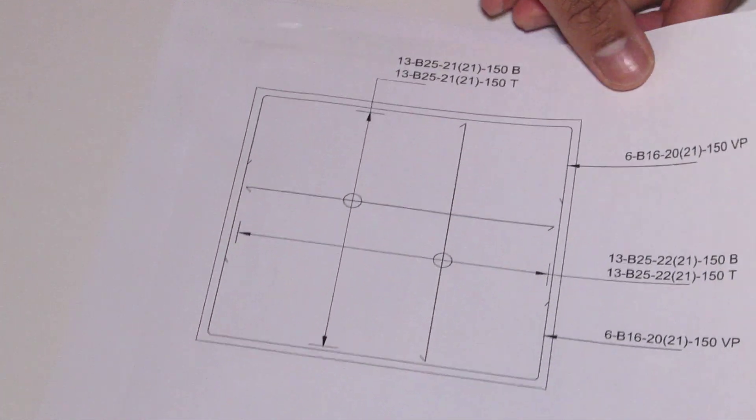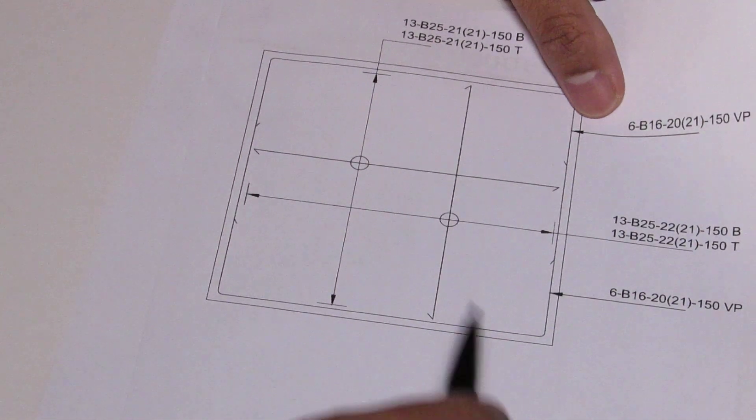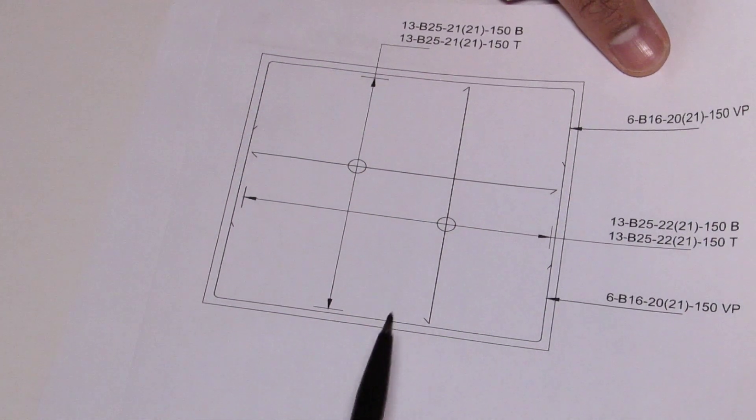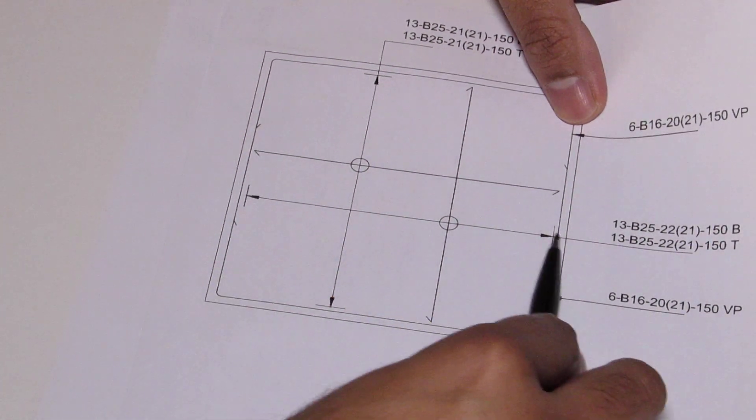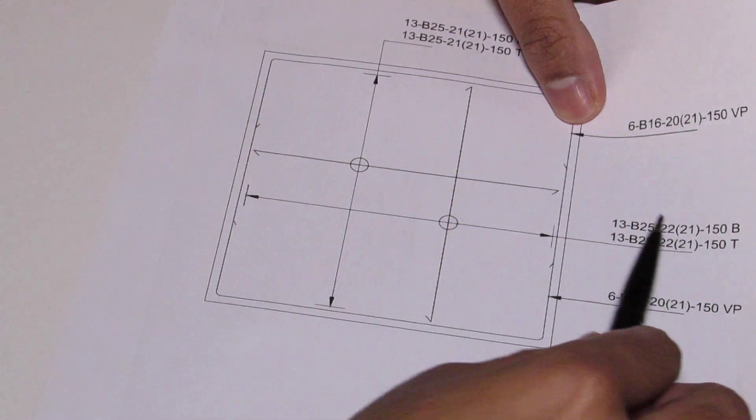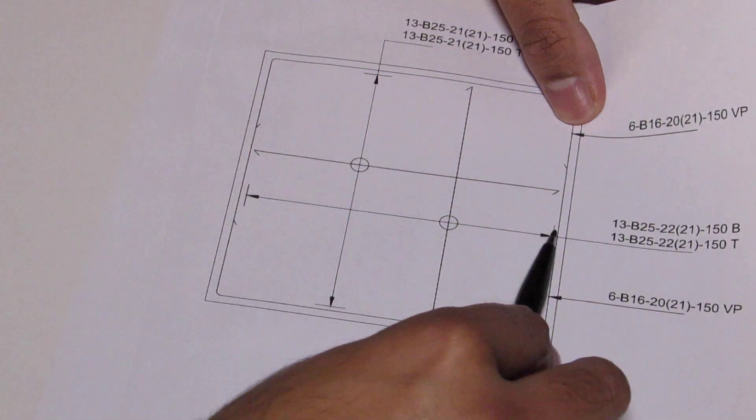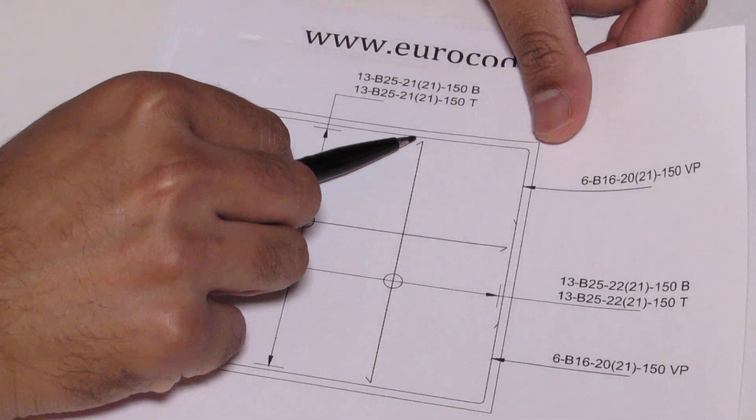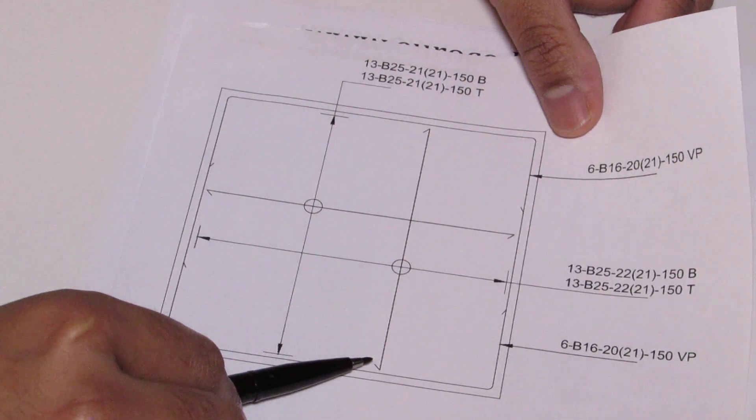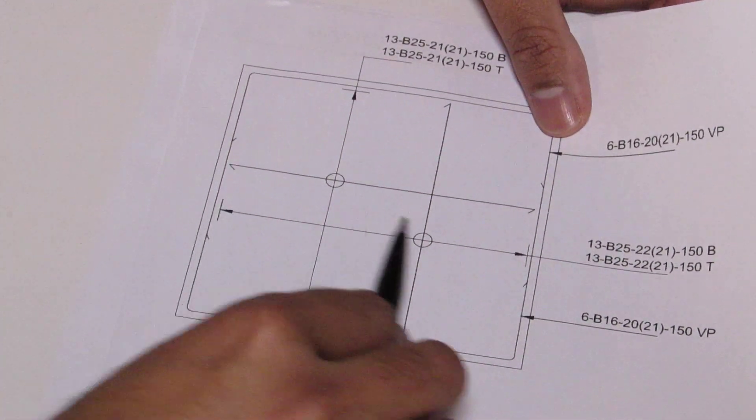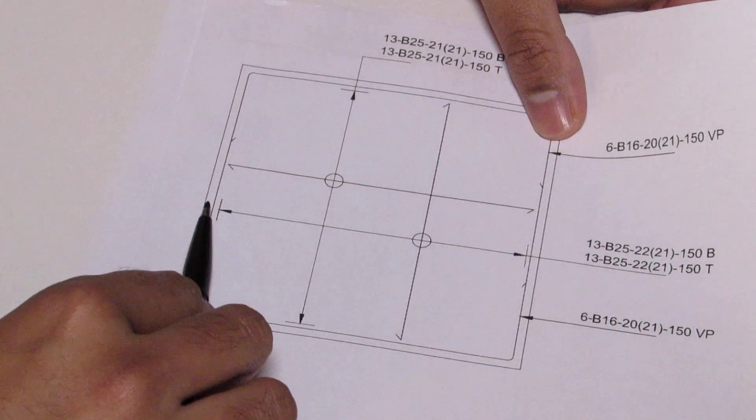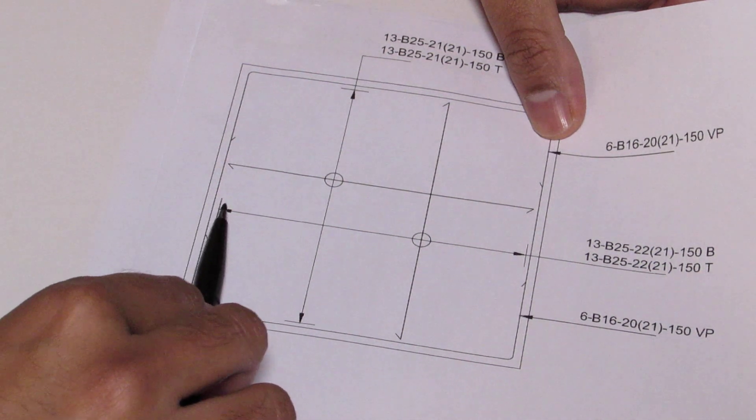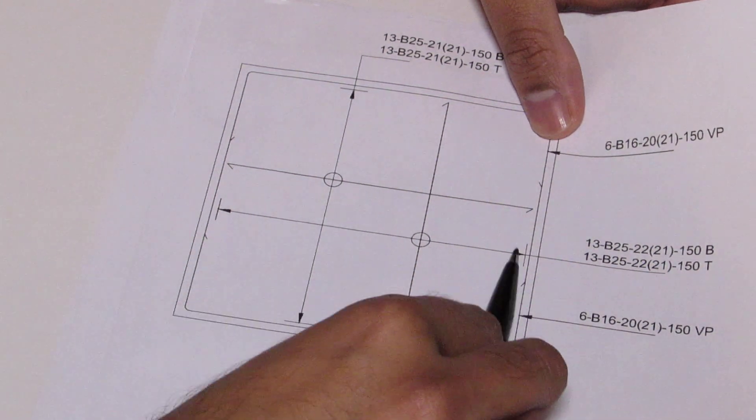How to read this particular, this is a very simple reinforcement drawing. How to read this bar or the bar mark is that bar extends from this top end to this bottom end. And then you have 30 number of those bars, 150 millimeter centers, from this point to this point.